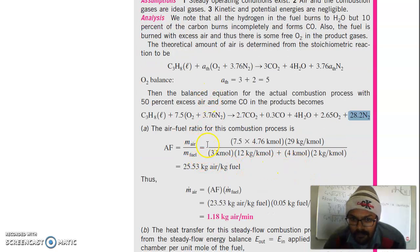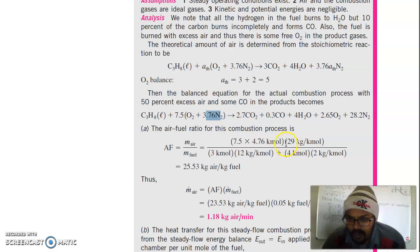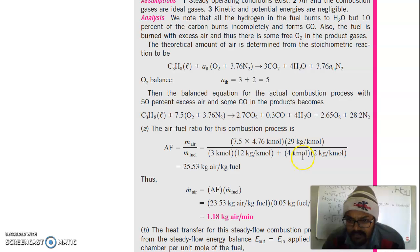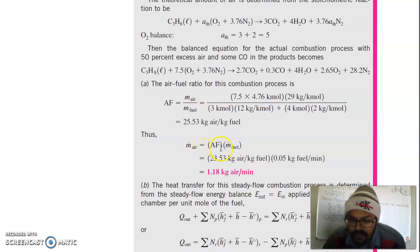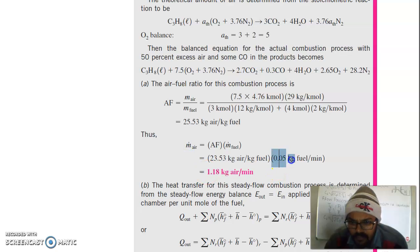Now we find the air-fuel ratio: mass of air divided by mass of fuel. Mass of air = 7.5 × (1 + 3.76) × 29 kg/kmol. Mass of fuel = 3 × 12 + 4 × 2 kg/kmol. Mass of air equals air-fuel ratio times mass of fuel. Since mass flow rate of fuel is 0.05 kg/min, multiplying by the air-fuel ratio gives the mass flow rate of air needed.